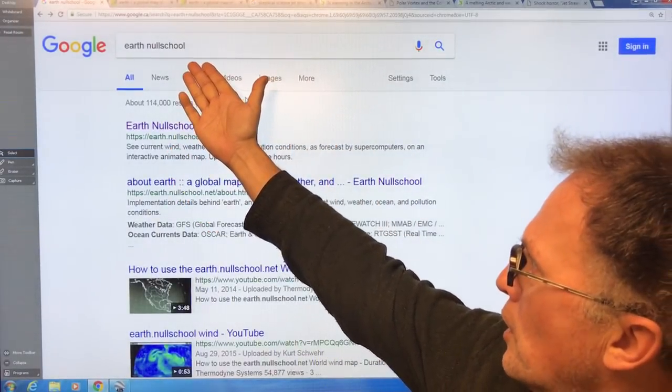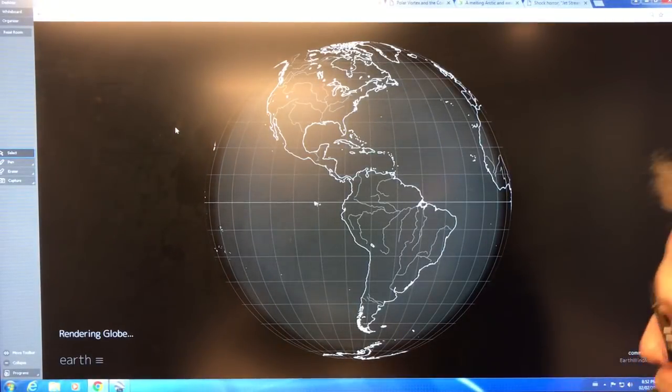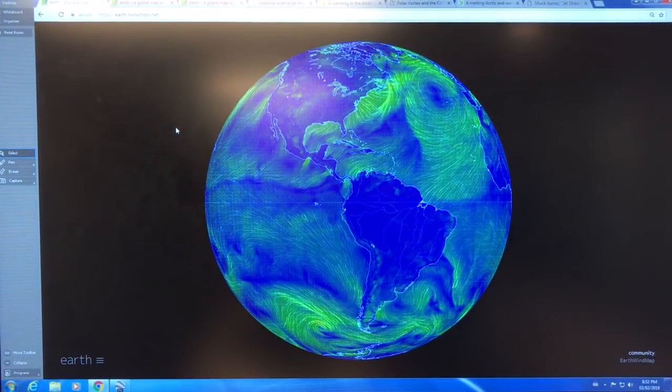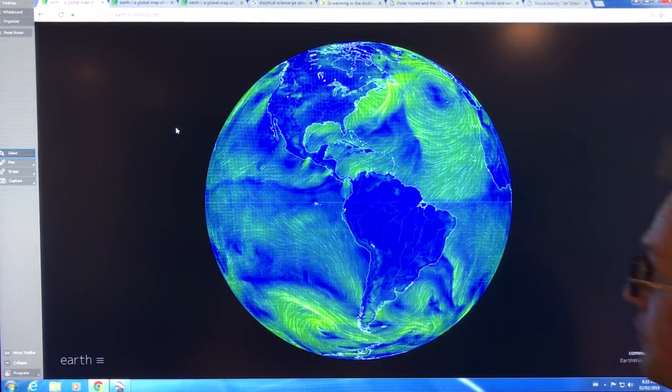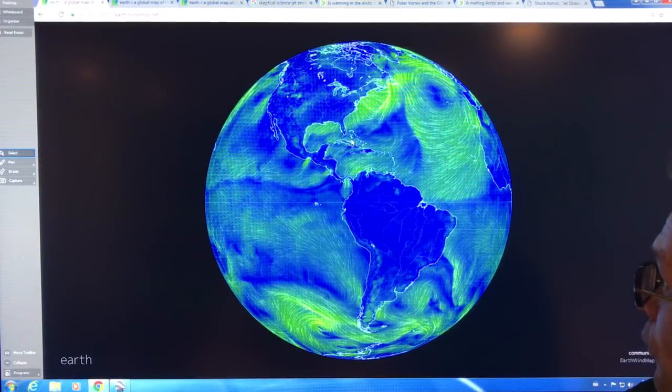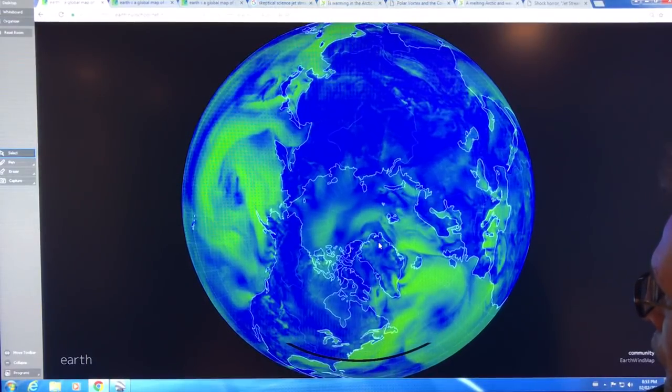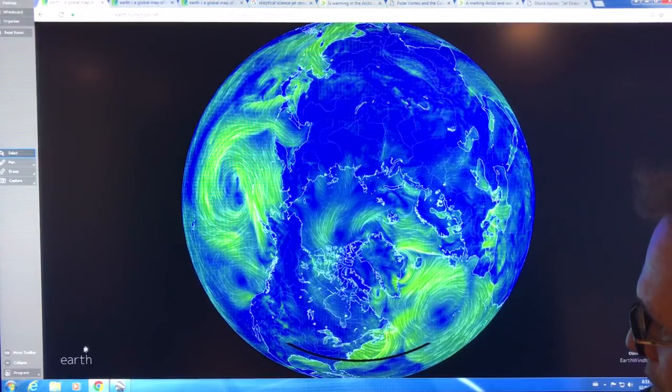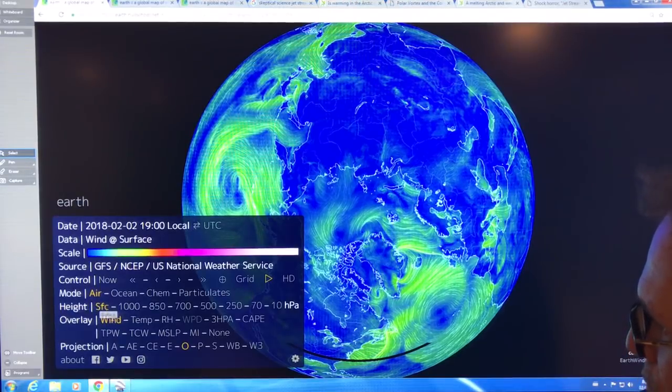So Google Earth Null School, and you get this type of thing. I'll just get the lights. There's some dirt on the camera lens, excuse me. Let me show you what's happening here. You can follow along if you have a second device. So you get this if you Google Earth Null School. First of all, we'll go up to the Arctic. We'll just drag this and expand it a little bit. So here we are in the Arctic, Greenland, Canada, Asia. Click on Earth.